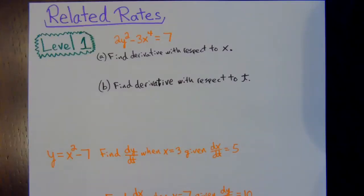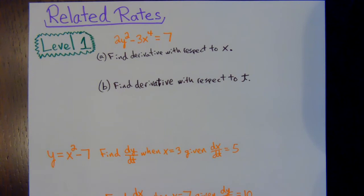Related rates — great word problems, everybody's favorite. These can be a little intense sometimes, so I want to break this up into three separate videos: level one, level two, level three. Level one covers basic easy problems — they give us the equation and the symbols. You're basically just practicing taking the derivative, practicing with notation, and practicing plugging stuff in. Level one, no big deal. Level two: they give us word problems and you need to come up with the symbols all by yourself, then turn it into a level one problem.